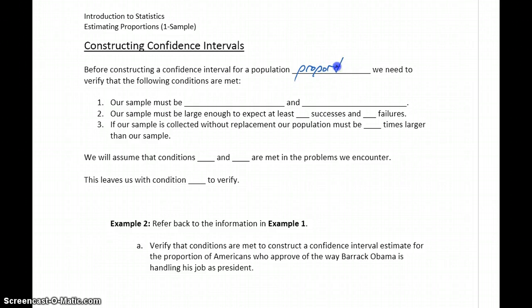In order to estimate a population proportion, our sample must be random and independent. Our samples must be large enough to expect at least 10 successes and 10 failures. And if our sample is collected without replacement, meaning as soon as an item or person is selected they're not put back in so they can't be selected a second time, then our population must be 10 times larger than our sample.